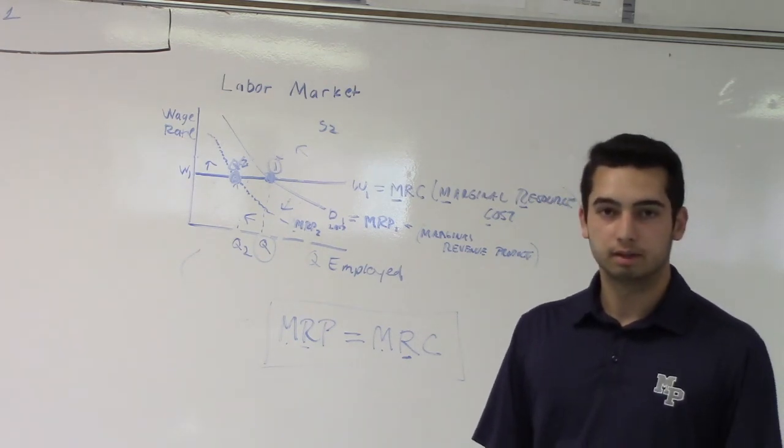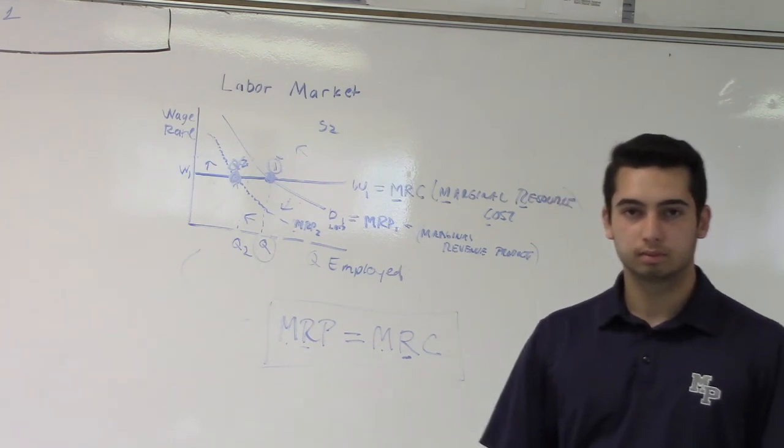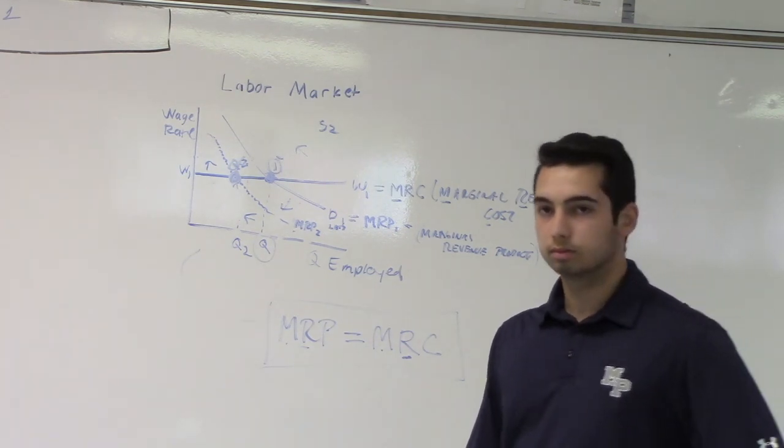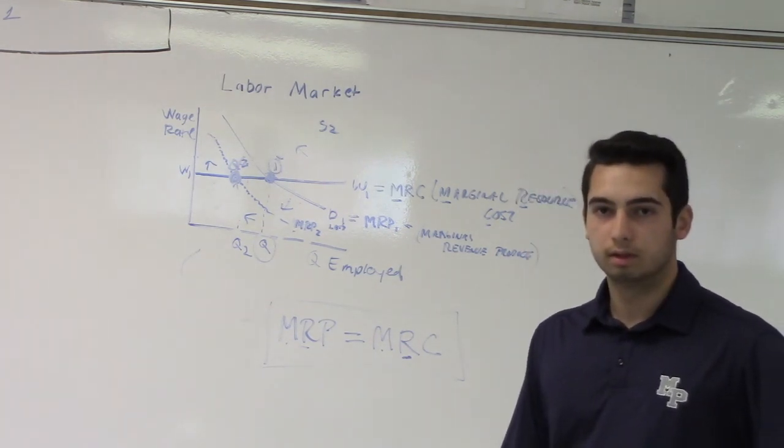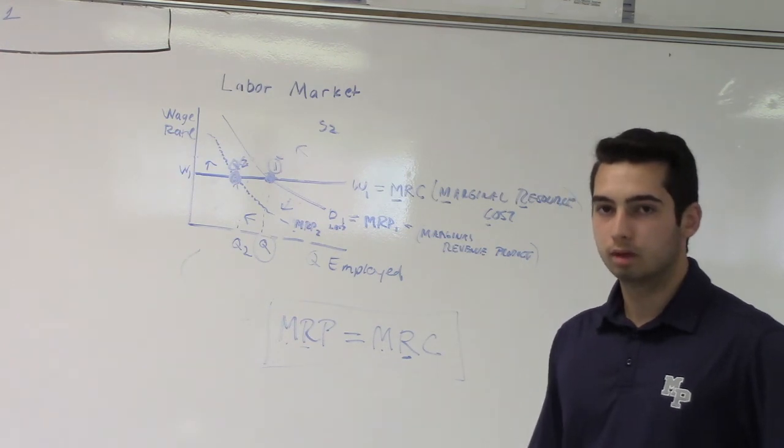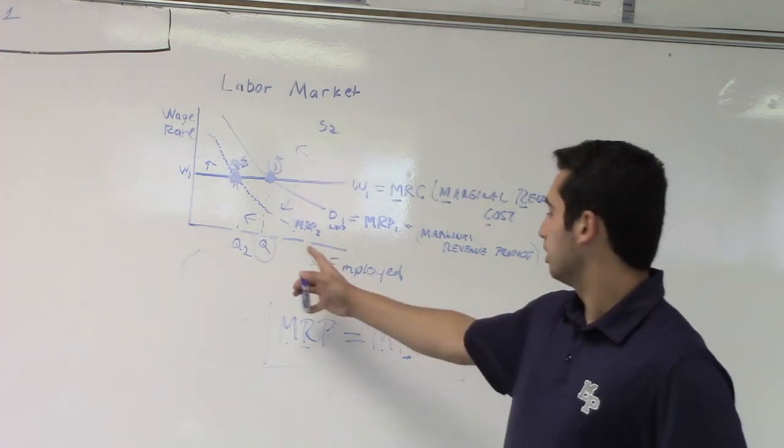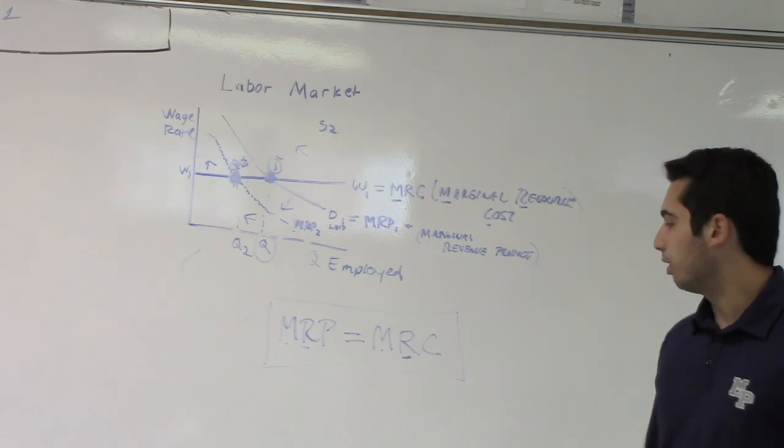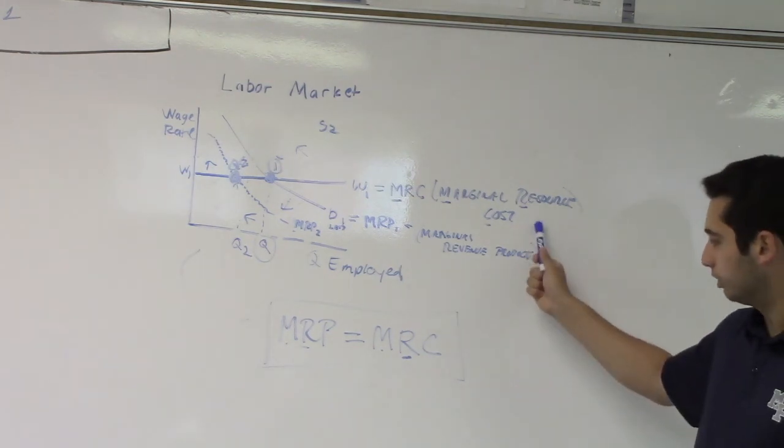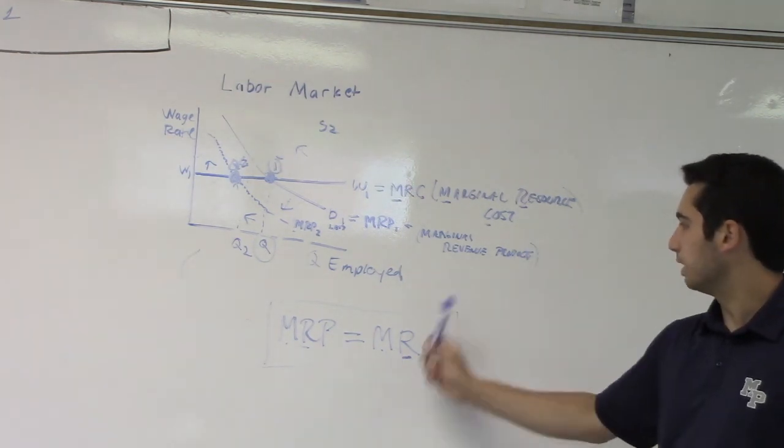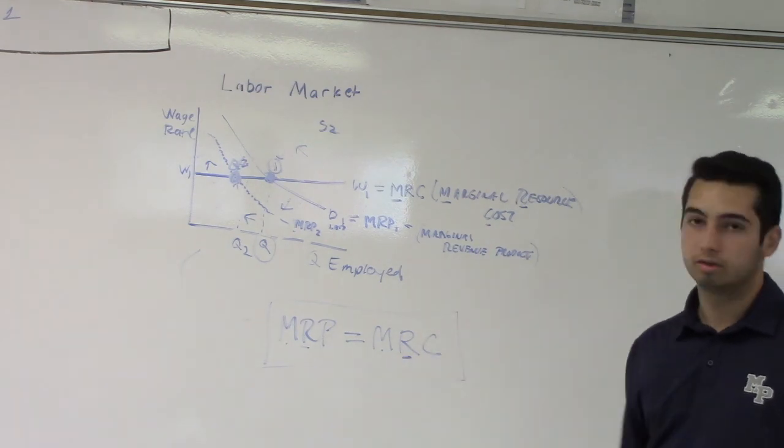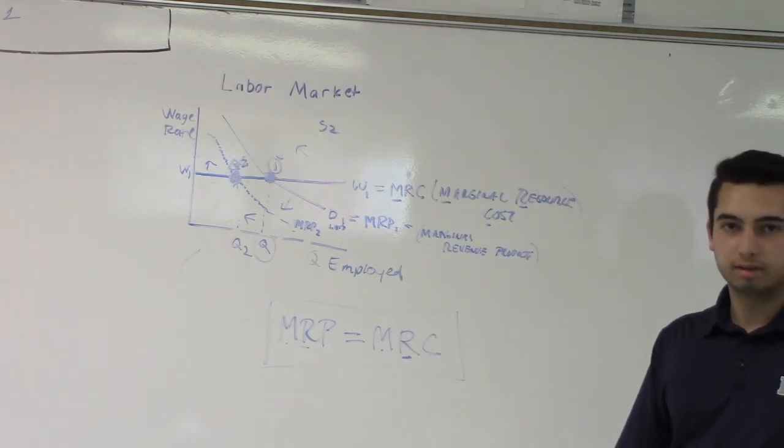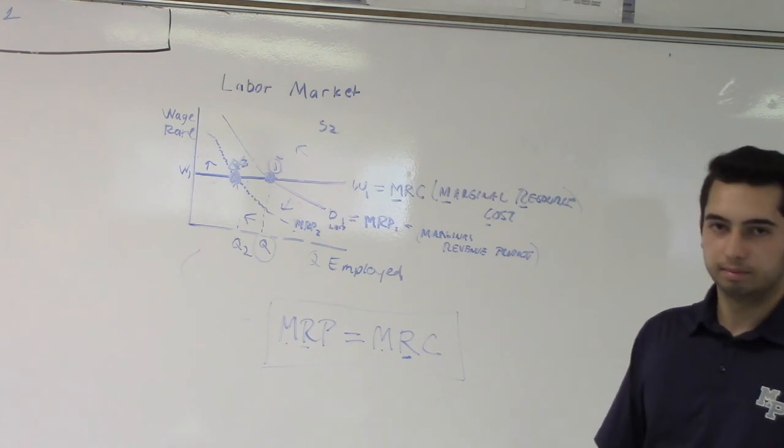So Sean, one last thing on that question in the explanation we did ask you to explain. In the product market, it was where MR equals MC. What is it in the labor market, in that little box you have there? Yeah, we have the MRP equals the MRC, which is the marginal resource cost, equals the marginal revenue product. Perfect, and that's how you found the quantity of labor in this question. Excellent job.